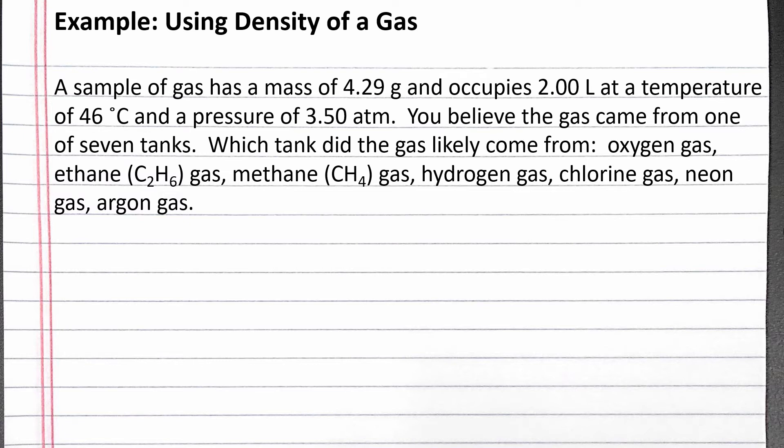To identify the gas, we will want to calculate the molar mass of the gas. We can start with the equation for the density of a gas and rearrange it to solve for the molar mass. Where M is the molar mass, D is density, R is the ideal gas law constant, T is absolute temperature, and P is pressure.